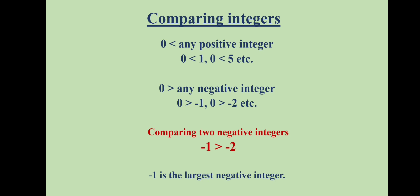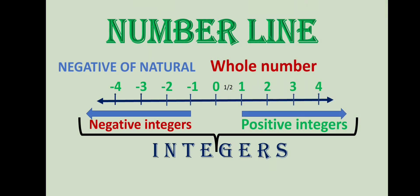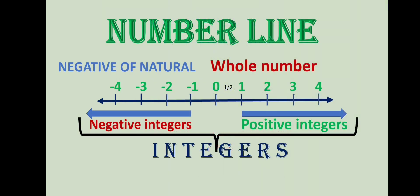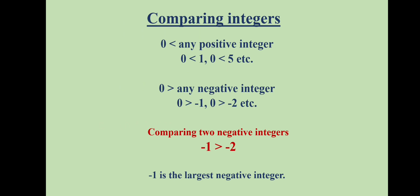Now let us compare integers. Zero is the smallest whole number and is less than any positive integer, but zero is greater than any negative integer because it is to the right of all negative integers. When comparing two negative integers, say negative one and negative two, the one further right on the number line is greater, so negative one is the greatest. Which is the largest negative integer?